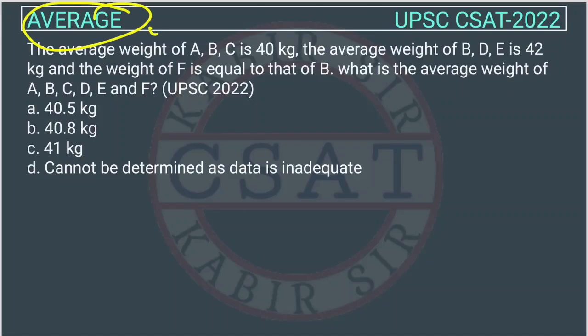This is the question of average asked in UPSC CSET exam 2022. The average weight of ABC is 40 kg.